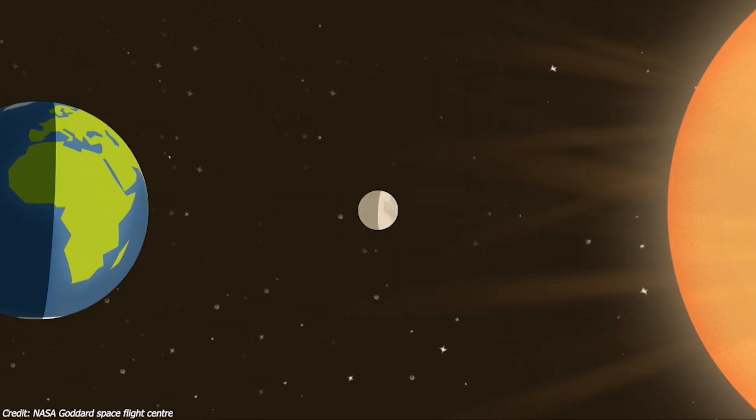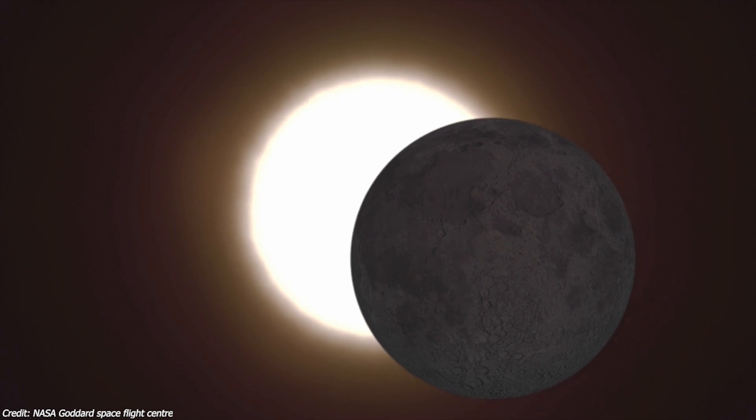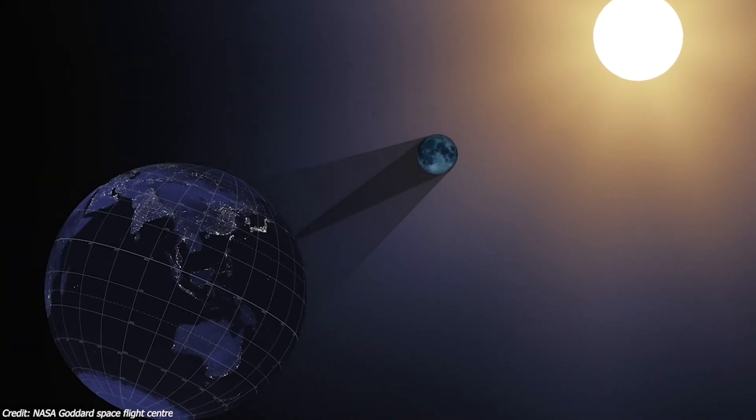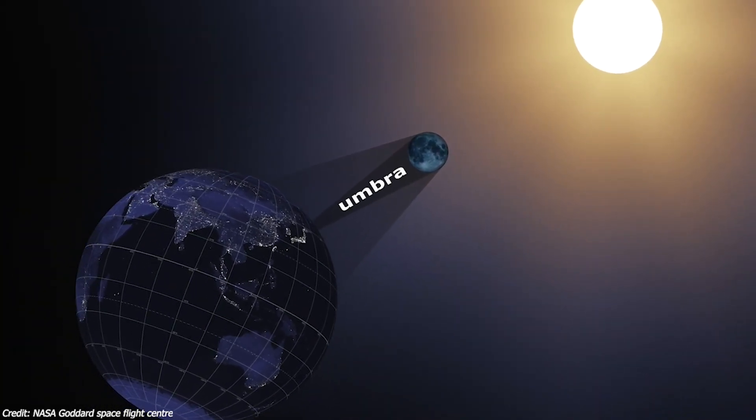Solar eclipses occur when the moon comes between the Earth and the Sun, casting a shadow on the planet and fully or partially blocks sunlight. The shadow of the moon has two parts, umbra and penumbra.